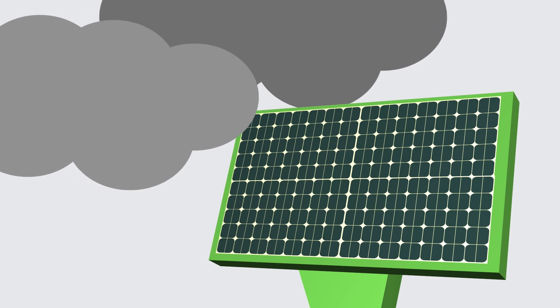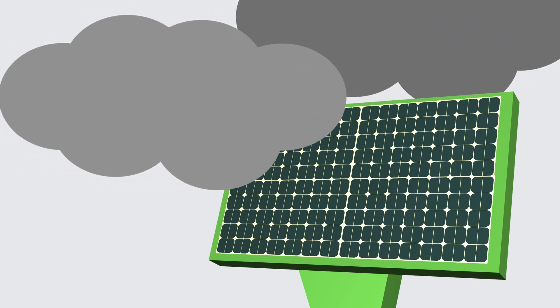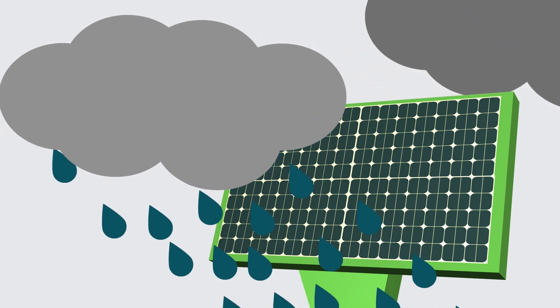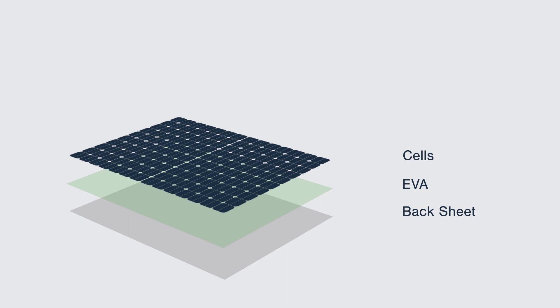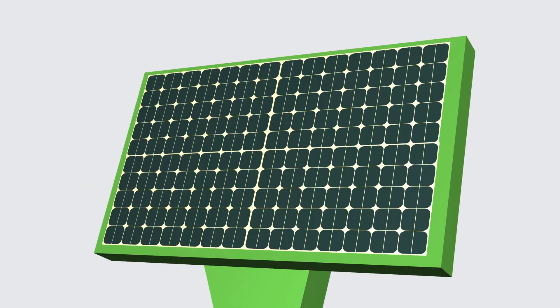What is the internal structure of the solar panel that can resist rain and snow? Usually, the structure from top to bottom is PV glass, EVA, cells, EVA, back panel or PV glass, and aluminum alloy frame and junction box.